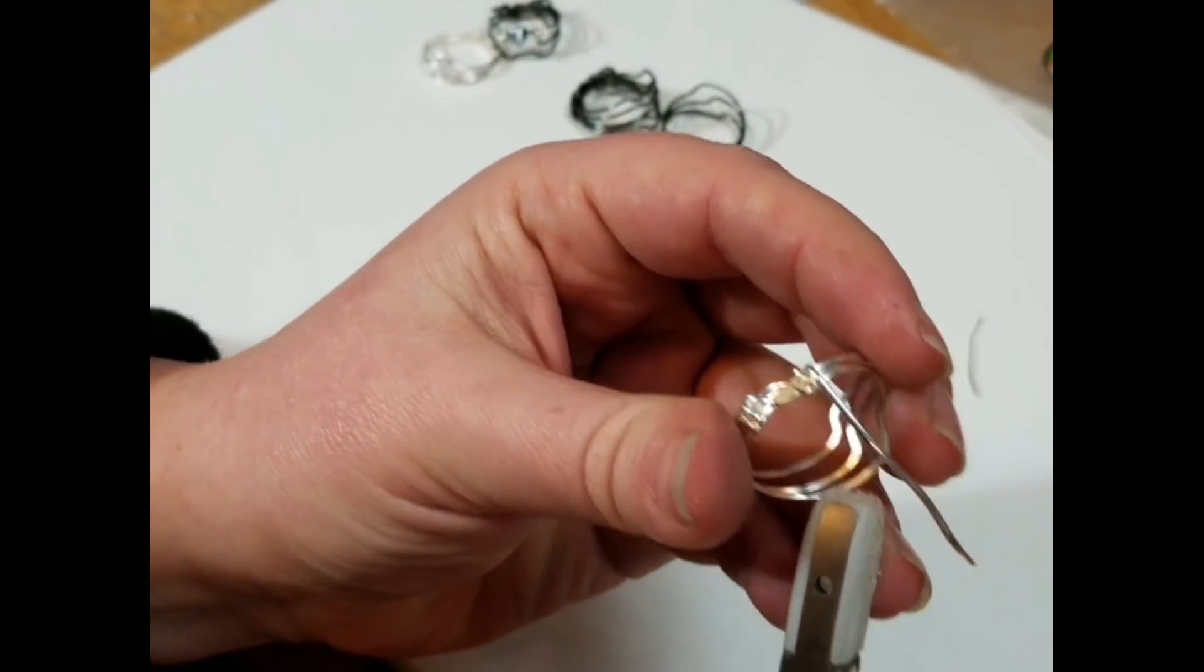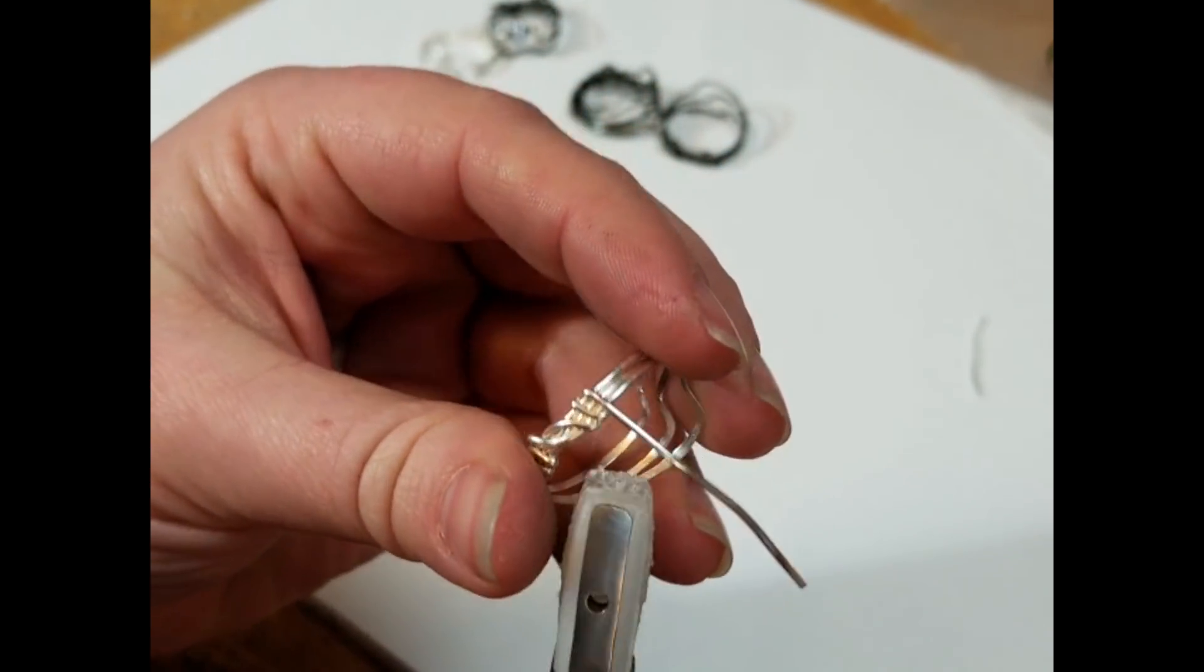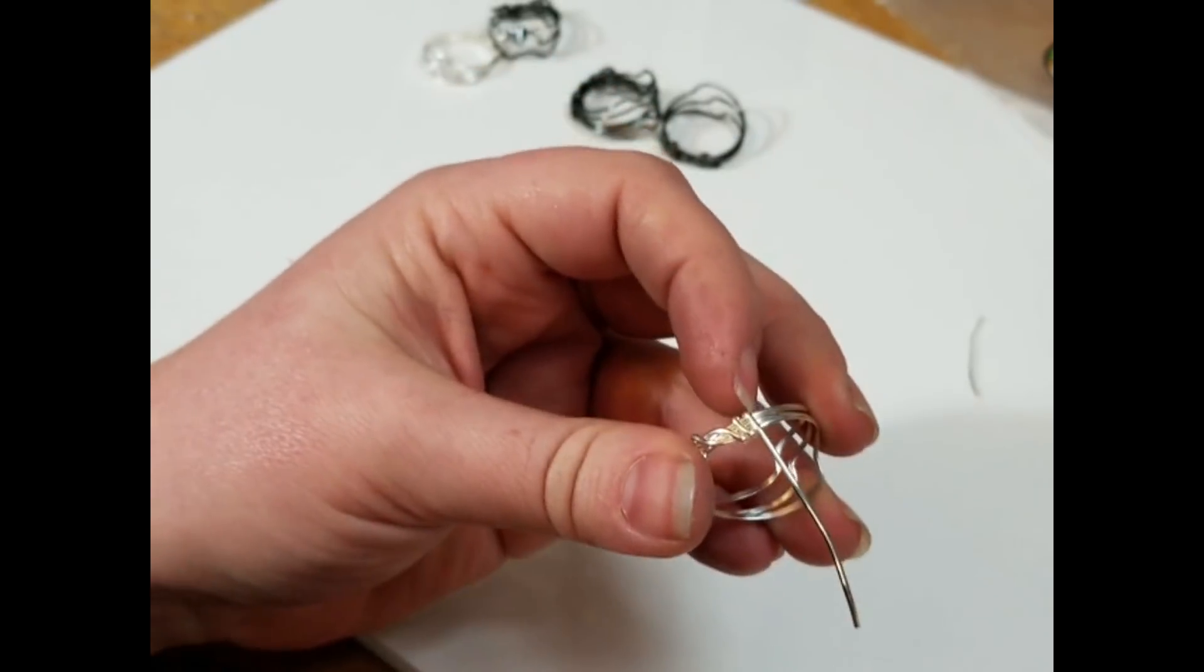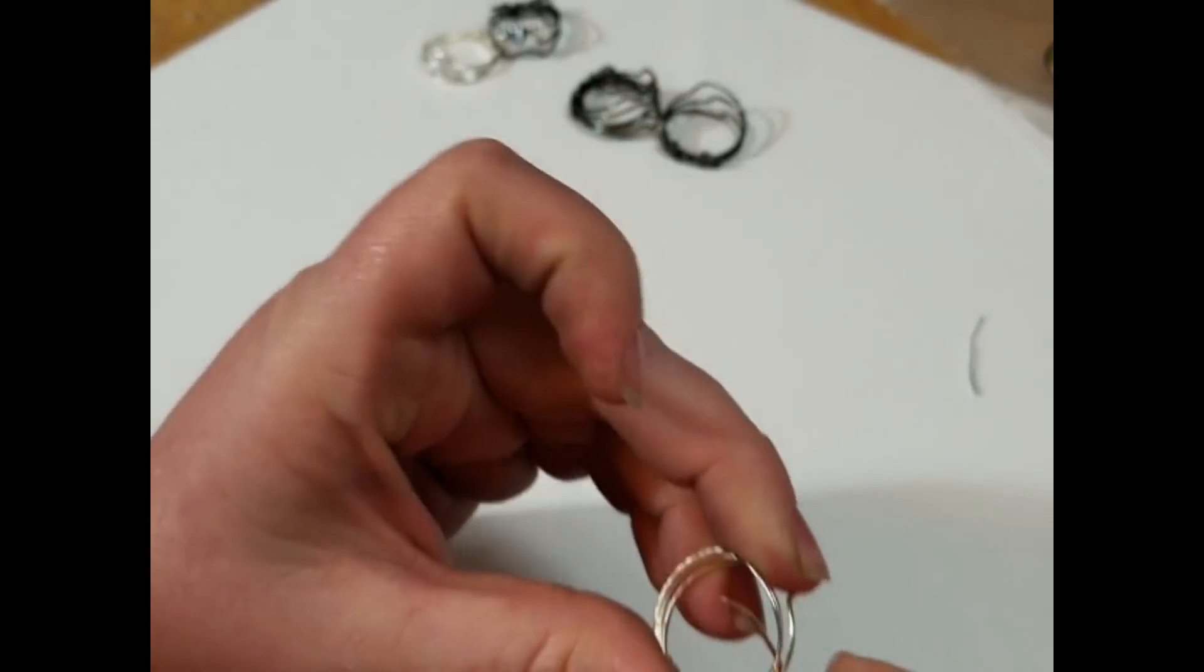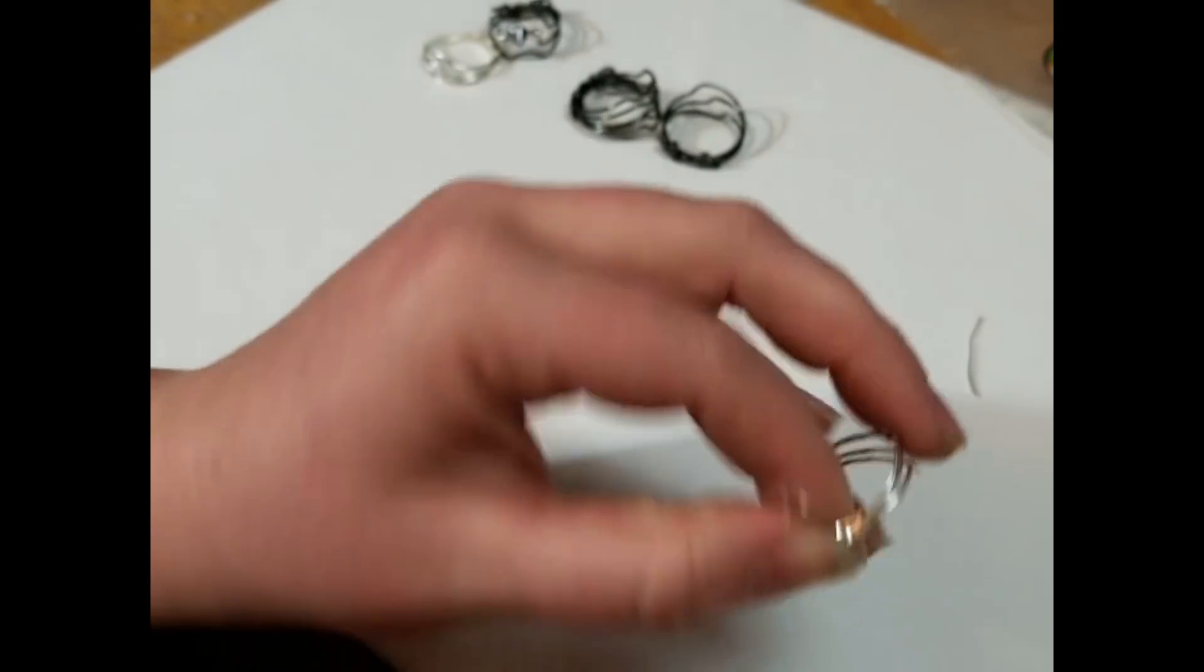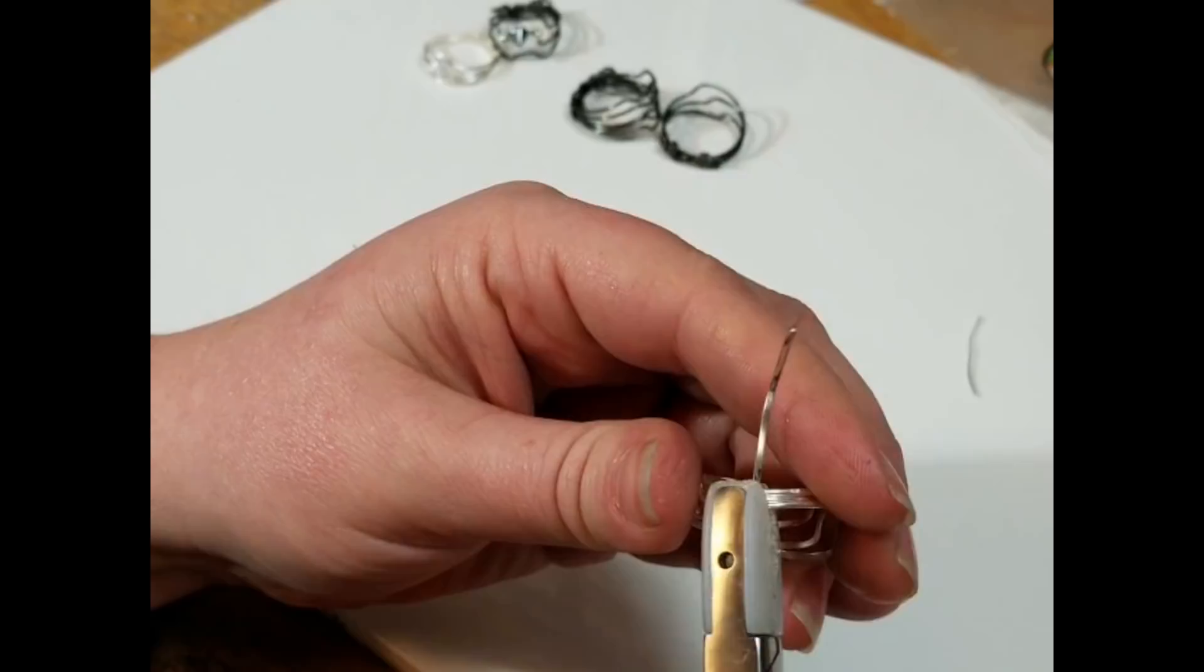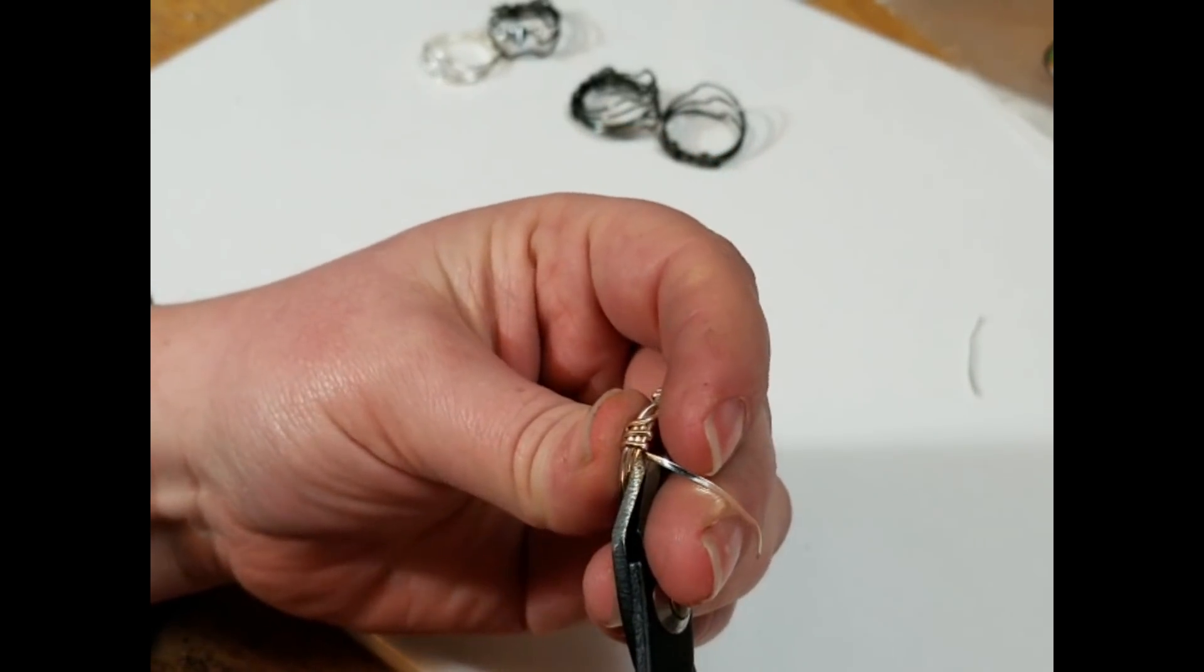I really like using flush cutters because they have that perfectly flat side. So, it lets you get right up against what you're doing. And then I'm going to do that same thing on the other side. And it has such a tendency to want it to be rounded. So, coming in with my nylon jaw pliers, it helps keep it flat. And now I'm going to do the finisher. And use my flush cutters to just snip.